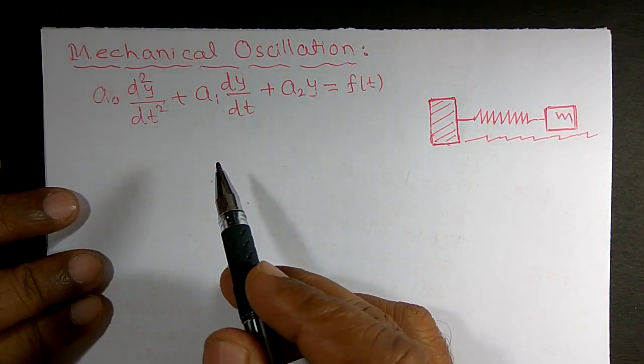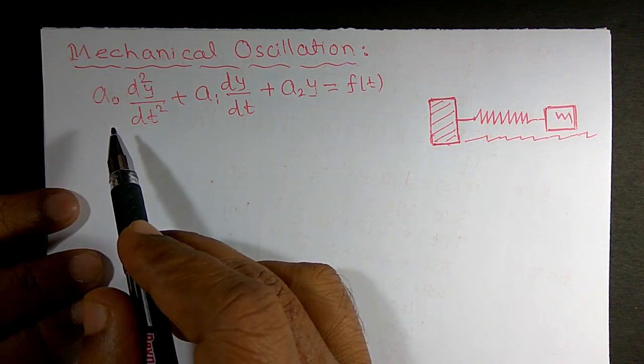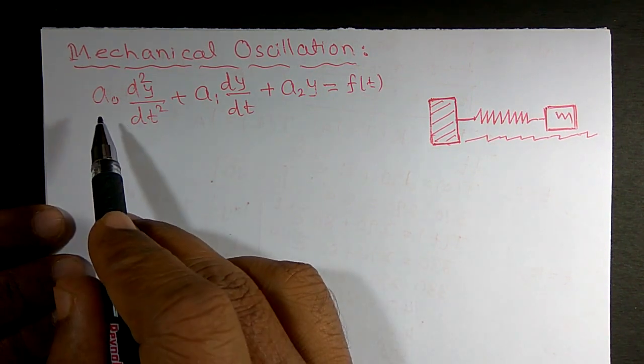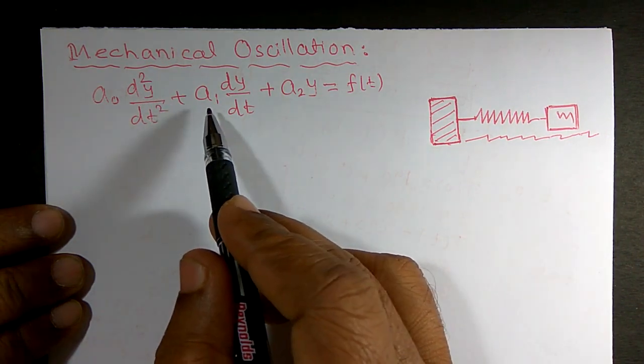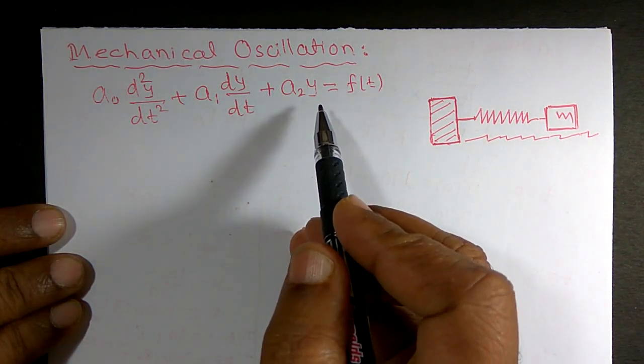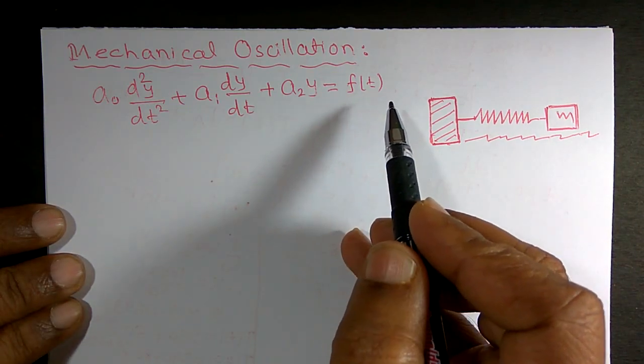Hello friends, here they have given a differential equation namely a0 d²y/dt² plus a1 dy/dt plus a2 y equals f(t).